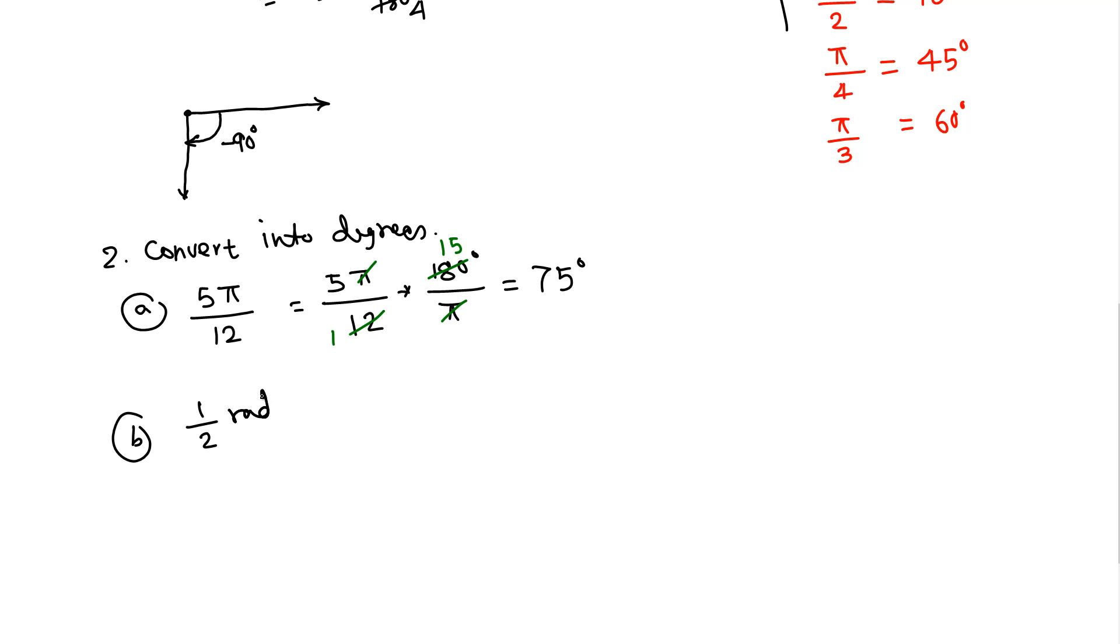In the same way, let's say we have just one half radian. Sometimes the radian measure can come without π. If we want to change into degrees, this is one half, we need to multiply by 180 over π.